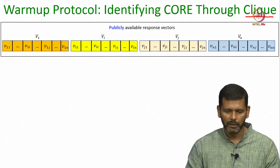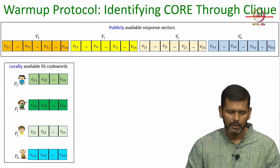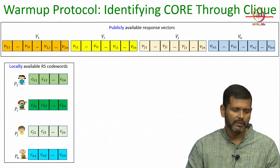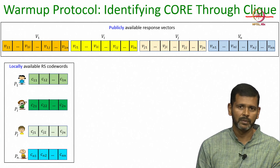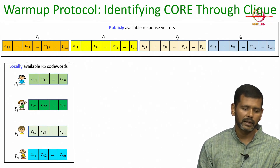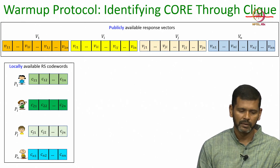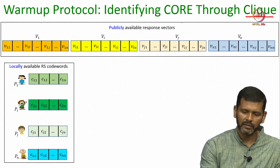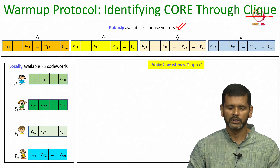In the warm-up protocol, each party has prepared its response vector and each party would also have received a local codeword from the sender. They do not know whether the sender has distributed the same codeword to all the honest parties or not. To identify this, each pair of parties would have exchanged a constant number of supposedly common points on their respective local codewords. Based on that exchange they prepared response vectors and broadcasted them using instances of the bit broadcast protocol.